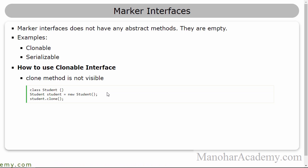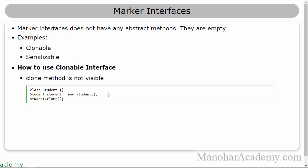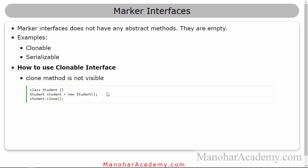When we say marker interface, we mean the interface that doesn't have any abstract methods. They are basically empty. So what is the use of such interfaces? If they don't have any abstract methods, you are not implementing any abstract methods in your class, and you are not going to get any services — the way we saw in the comparable interface. You are going to get some sorting service if you implement the comparable or comparator interface. But what is the benefit of marker interface? In this case, we are telling the compiler or the JVM that such and such behavior is allowed on these classes.